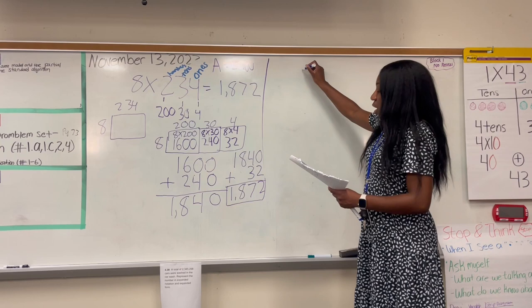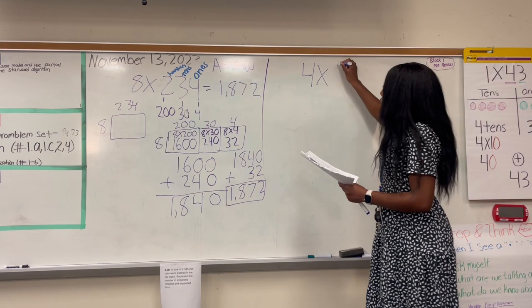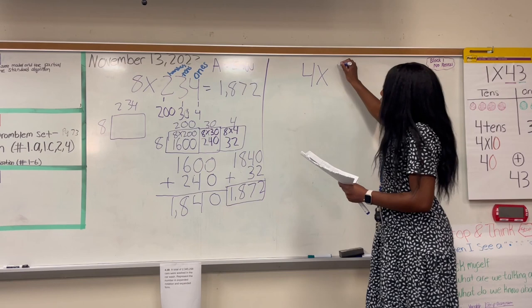So now that we've done that one together, I'm going to have you guys do one by yourselves. I'm going to have you guys do four times 316 in your notebooks. And this is the same thing. So whenever you get your workbooks, if there was a four digit number, it's the same thing. But remember, if there is a zero here, you're not going to have an extra box for that zero.